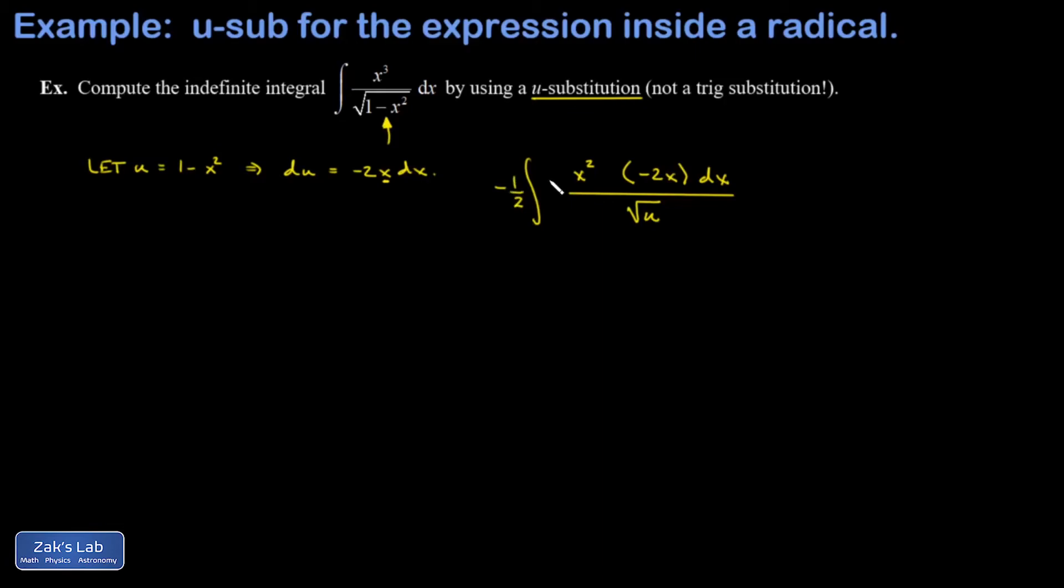And so I recognize du in this numerator, but I'm stuck with this annoying x squared that's got to be transformed in terms of u. And fortunately I can see how to do that from our original substitution with u. So I just need to solve this for x squared, and I get x squared is 1 minus u. All right, so I should be able to fully transform my integral now.